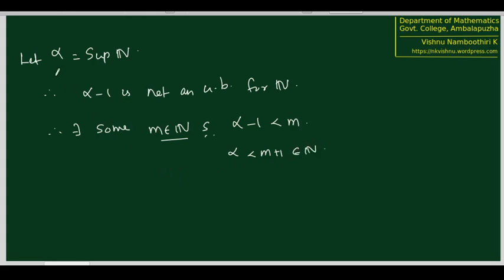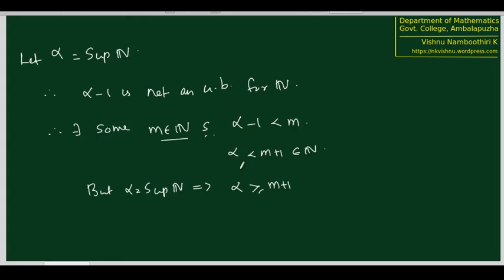But according to the assumption, alpha is the supremum of N. Since alpha is the supremum of N, alpha must be an upper bound for all the elements in N. Therefore alpha is greater than or equal to m plus 1. But how can these two together happen? We are getting alpha less than m+1 and alpha greater than or equal to m+1. This is a contradiction.